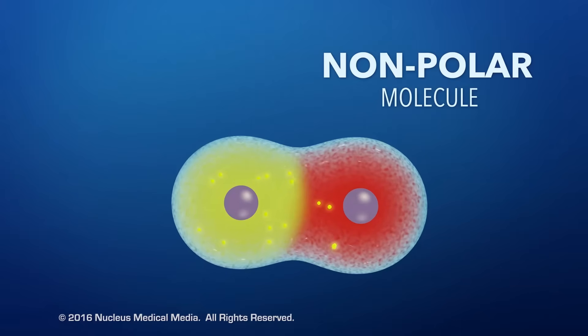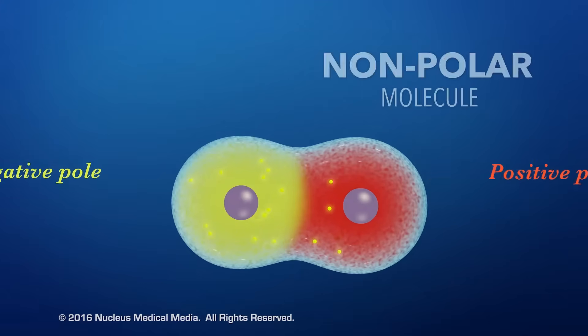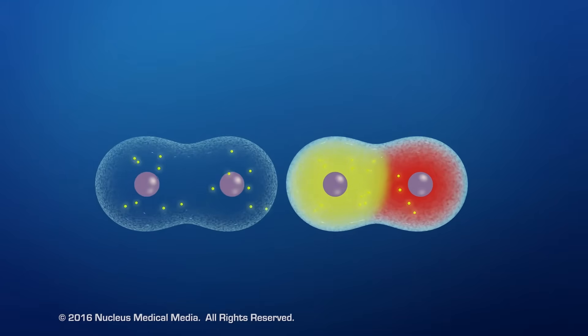This means the molecule can have a temporary negative pole on the side where there are momentarily more electrons and a temporary positive pole on the opposite side where there are fewer electrons. The momentary concentration of electrons in this molecule's negative pole can repel the electrons in a nearby molecule toward its opposite end, making the neighboring molecule polar as well.